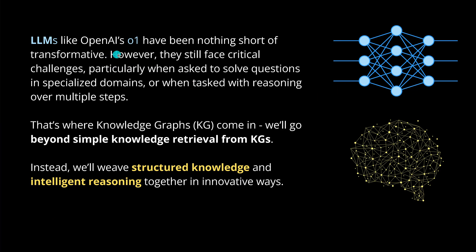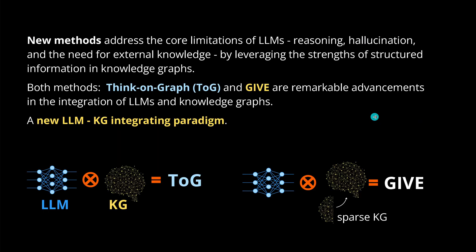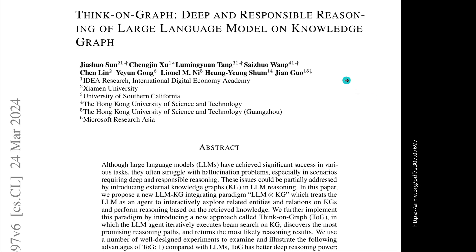LLMs like OpenAI o1 are nothing short of transformative, but today we're not just going to do simple knowledge retrieval from a Knowledge Graph. We will have new innovative ways to combine structured knowledge and intelligent reasoning together. Both methodologies I'm going to show you — ThinkOnGraph (TOG), which we've had for months, and the brand new GIF methodology by UC Berkeley — represent a remarkable advancement in the integration of LLMs and Knowledge Graphs.